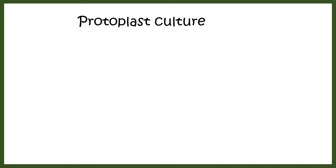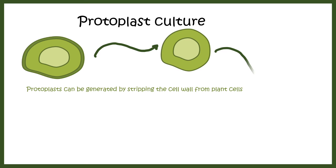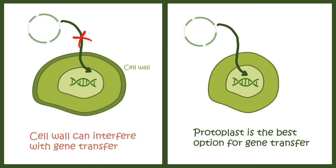Protoplast culture: a protoplast is a plant cell devoid of its cell wall. Protoplasts are widely used for genetic manipulation in plants because incorporating genomic DNA or plasmid DNA into a plant cell is very difficult due to the cell wall. Once the cell wall is removed, it is easier to insert DNA of your choice into the plant cell, so protoplast preparations are used by plant scientists for genetic manipulation.